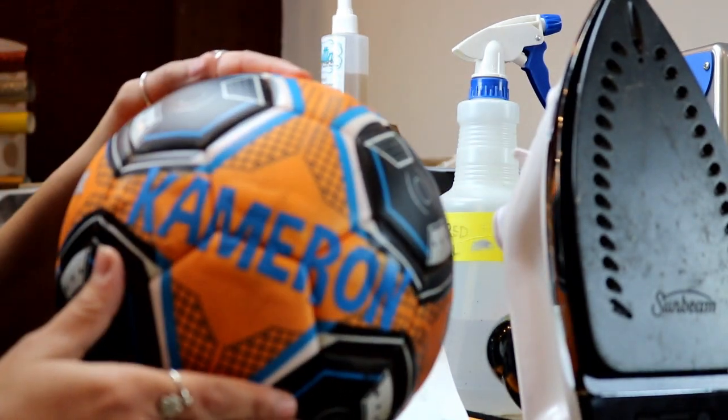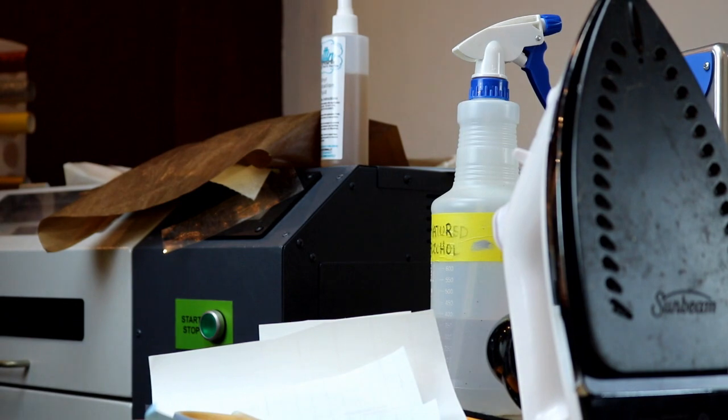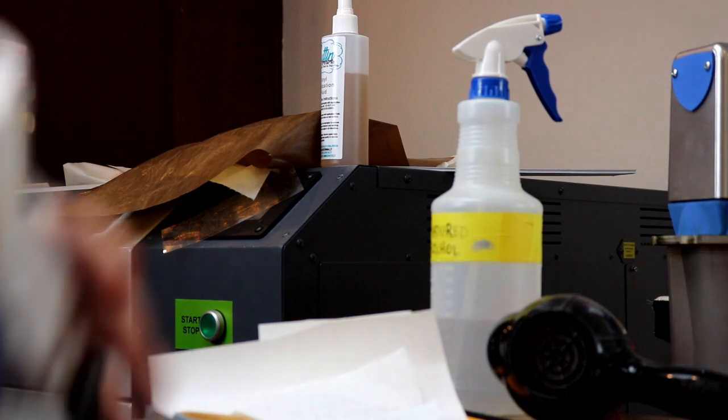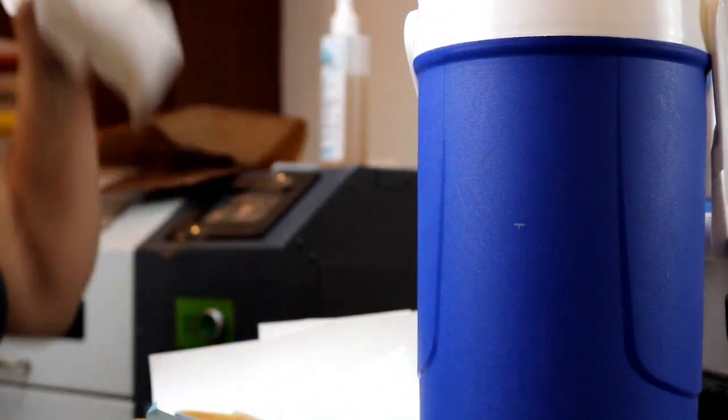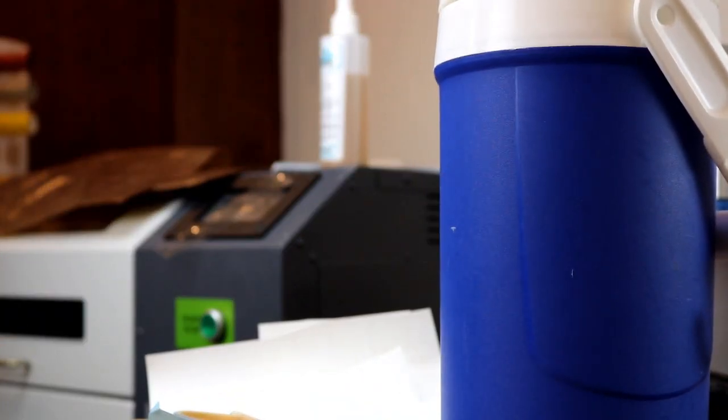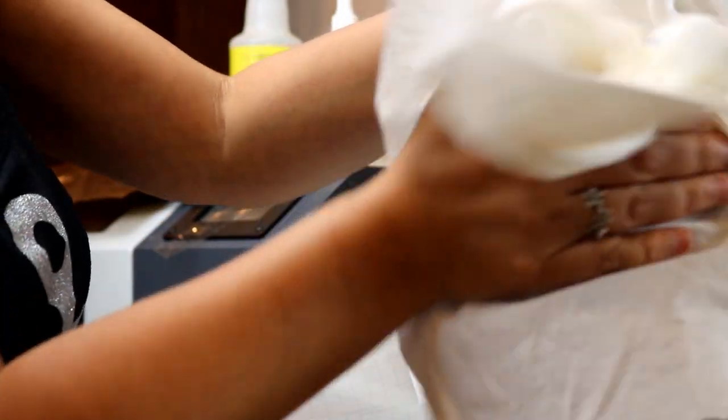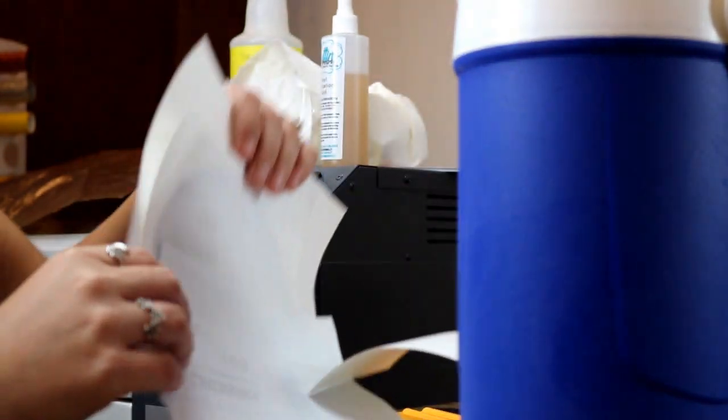Now what we're going to do is turn off my iron and move that out of the way. We've got Cameron's water bottle. Again, I'm going to take paper towel and denatured alcohol and clean the outside of it really well. Now everybody knows that when you're applying vinyl to a smooth surface it is easy. When you're applying it to a textured surface, it is a little bit harder.